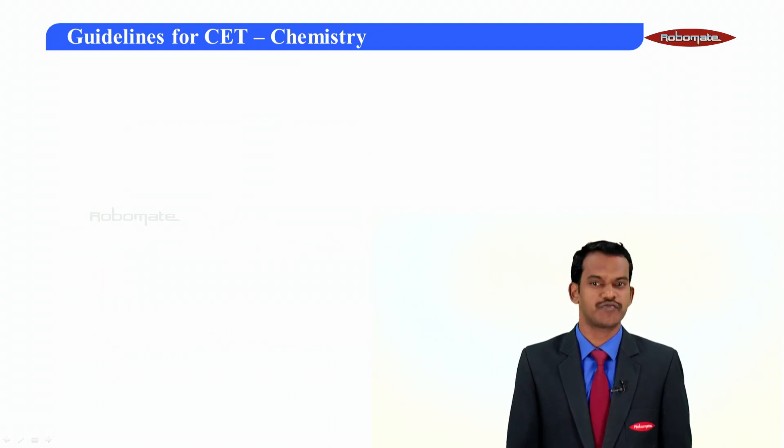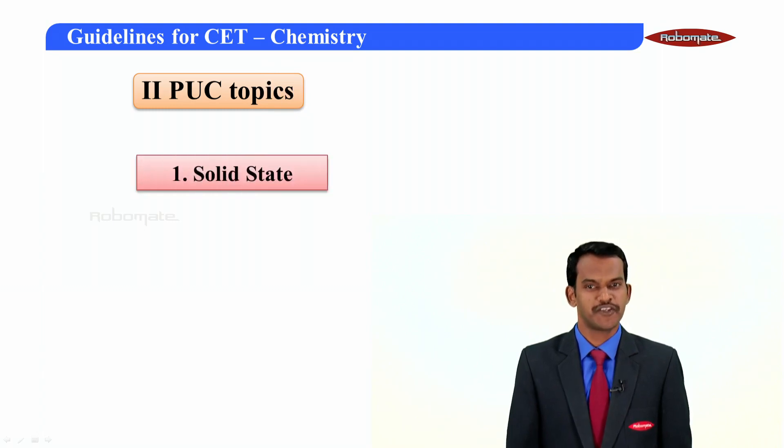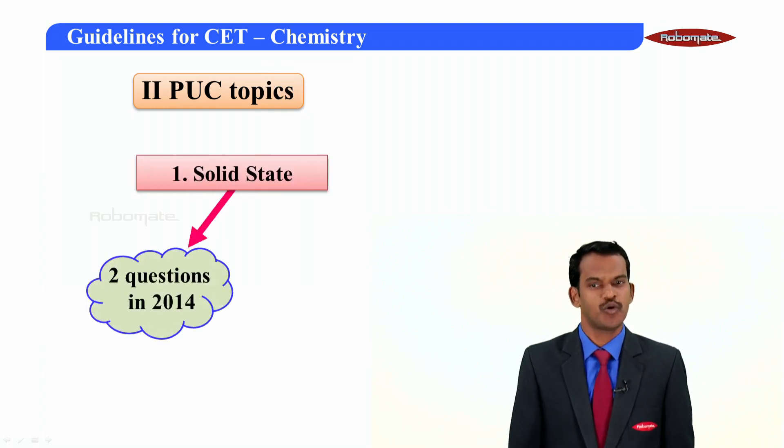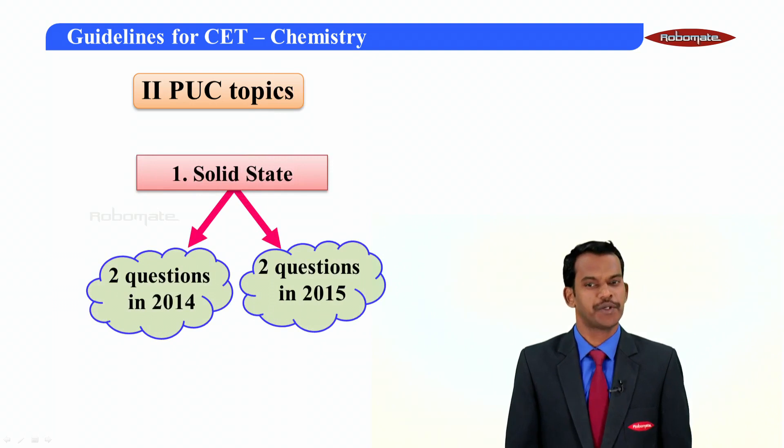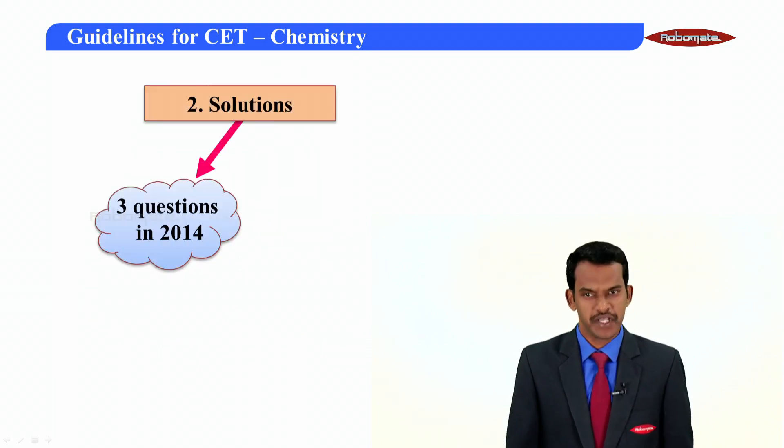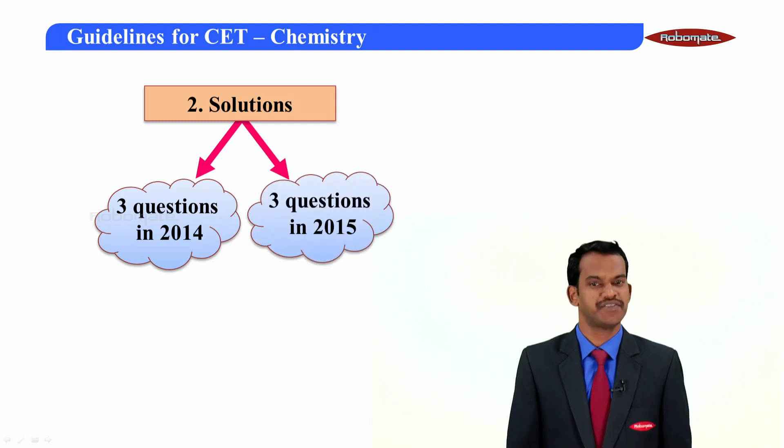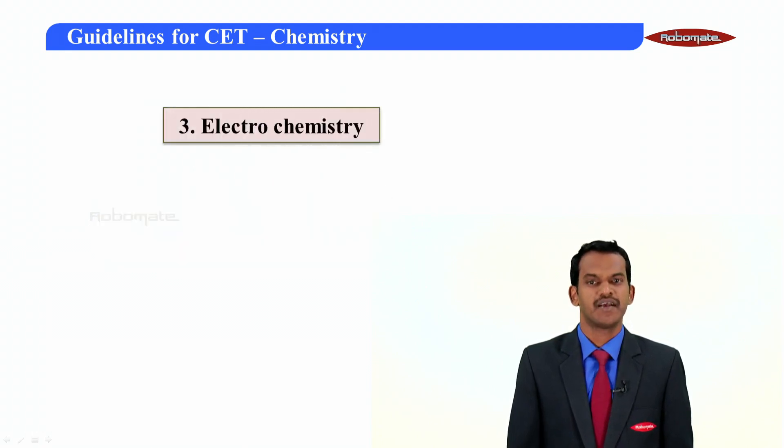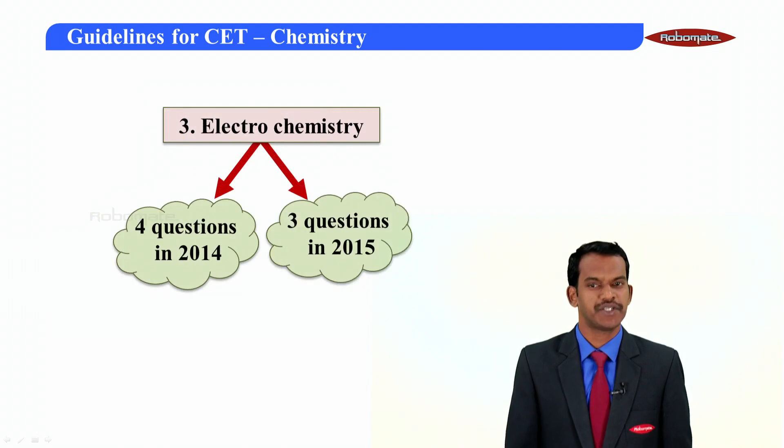This is a glance of 2014 and 2015 with respect to the first PUC syllabus. Coming to the second year topics: First topic, solid state - two questions in 2014 and two questions in 2015. Second topic, solutions - three questions in 2014 and three questions in 2015. Electrochemistry - four questions in 2014 and three questions in 2015.